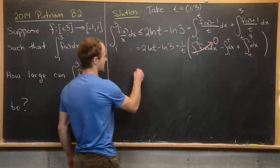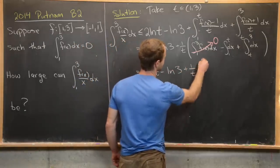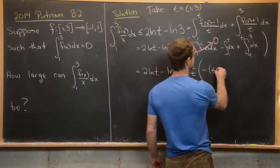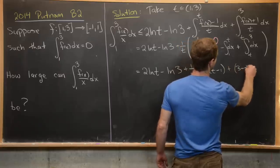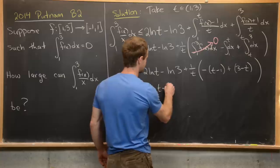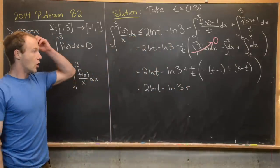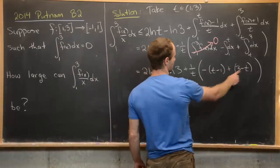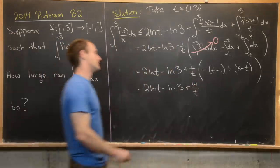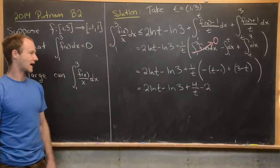After evaluating those simple integrals, we get 2·ln(t) - ln(3) plus (1/t) times [-(t-1) + (3-t)], which simplifies to 2·ln(t) - ln(3) + 4/t - 2. So our goal expression is always less than or equal to this expression involving t, for t ∈ (1,3).